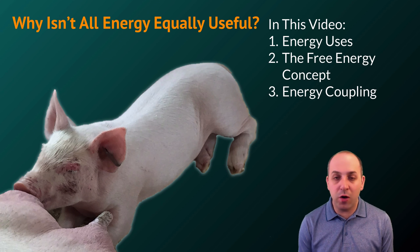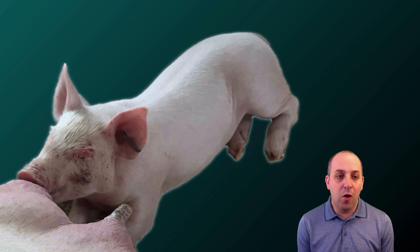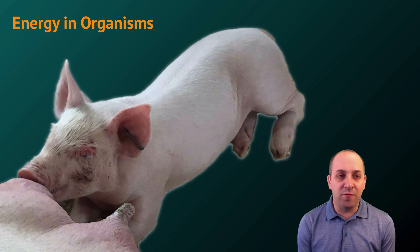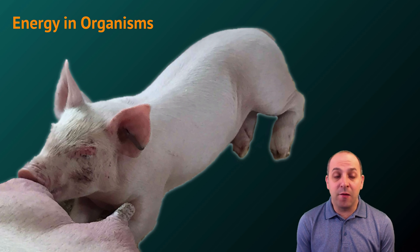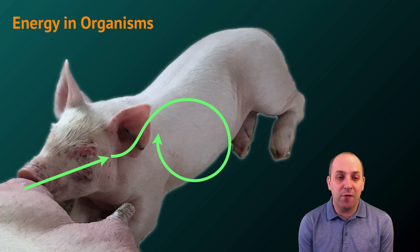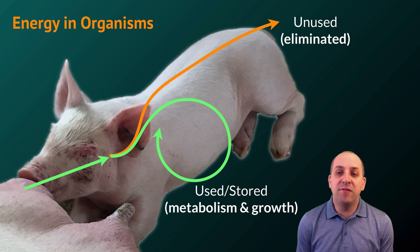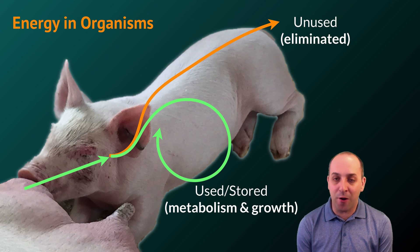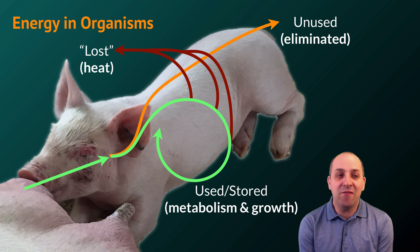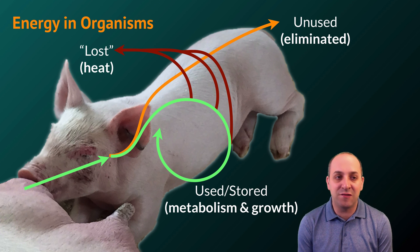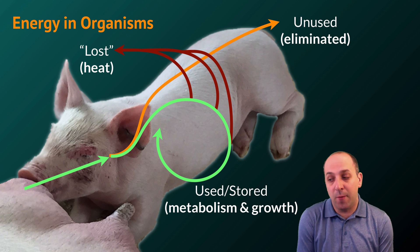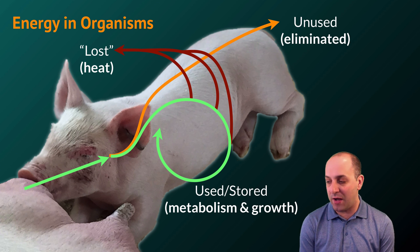In order to do that we're going to look at this pig suckling on its mother. Just like any other living organism, it is processing energy. The energy that this pig gets is coming entirely from mom. Some of that energy is going to be used or stored for metabolism and growth, some is going to be eliminated in waste products, and a lot of it is actually going to be lost to the system as heat energy, which is a consequence of the second law of thermodynamics.